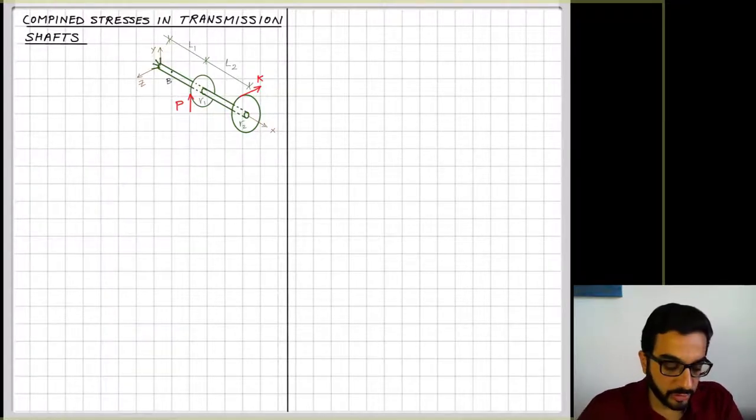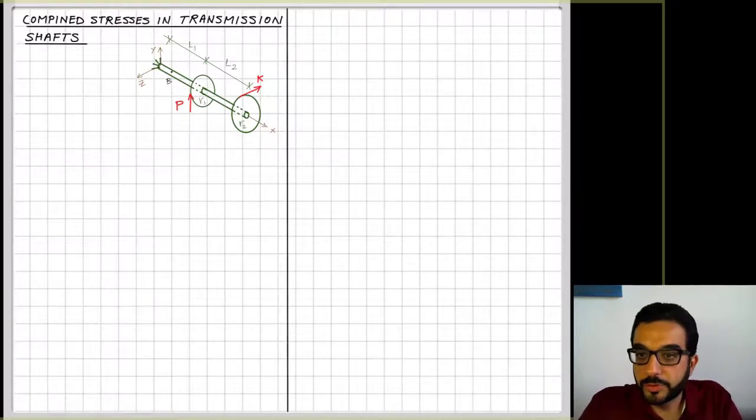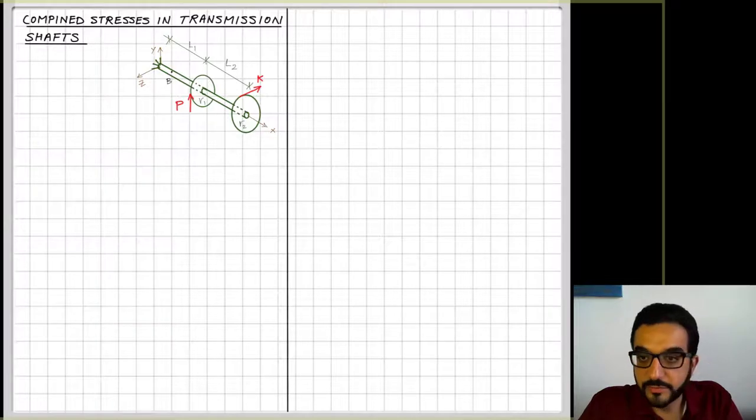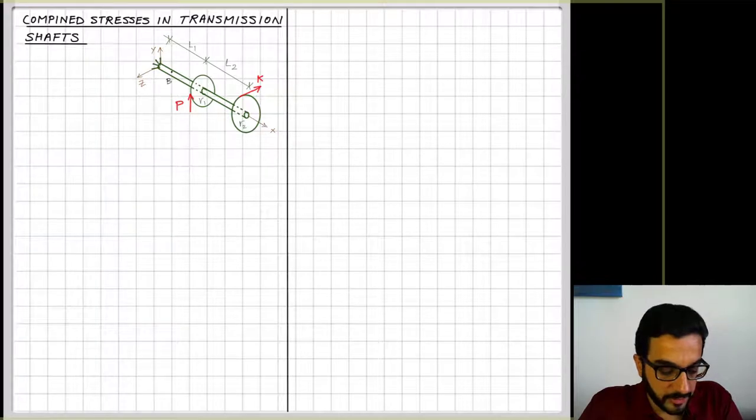So let's explain here the concept we'll learn using that example. So we have here that transmission shaft that's mainly supported at the left end of it.